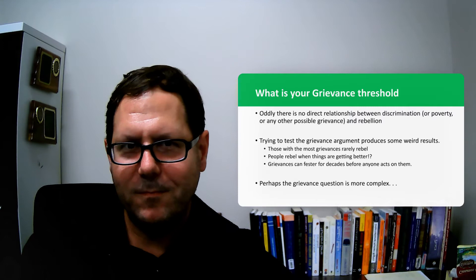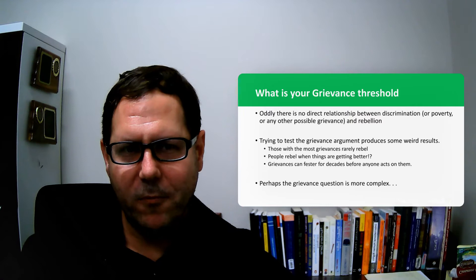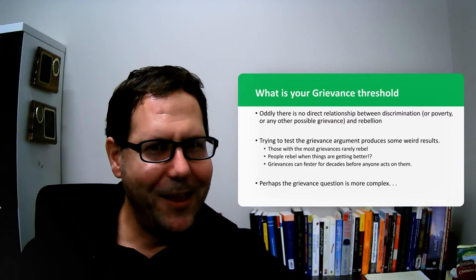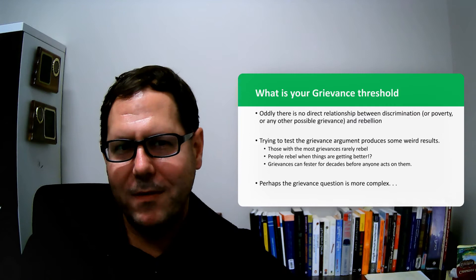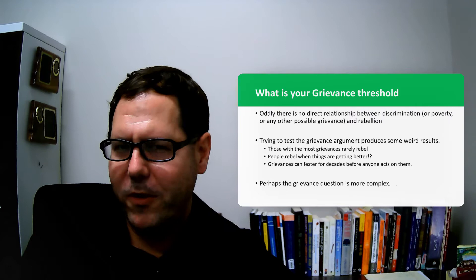Whether we're thinking about grievances in terms of economic conditions like poverty or cultural freedoms, it's not a straight-line relationship by any means. We get some really weird findings. One thing that's kind of weird is that those people with objectively the most grievances, the poorest of the poor, do not typically rebel. Weirdly, we see people rebelling when things are actually getting better, when their material conditions are actually improving.